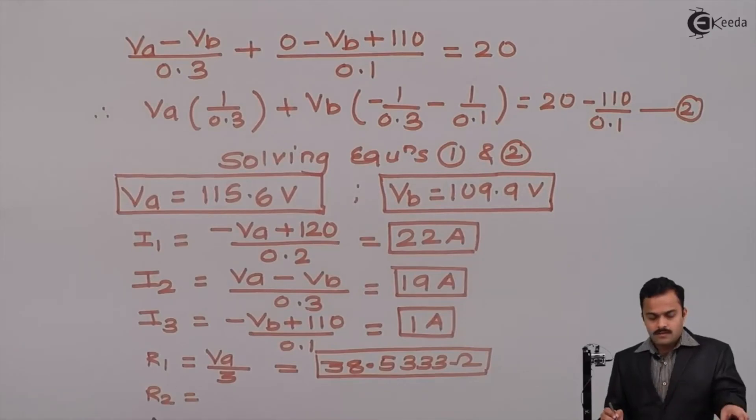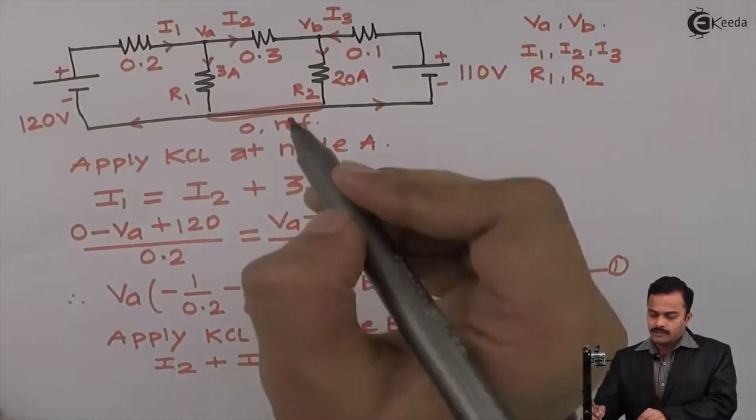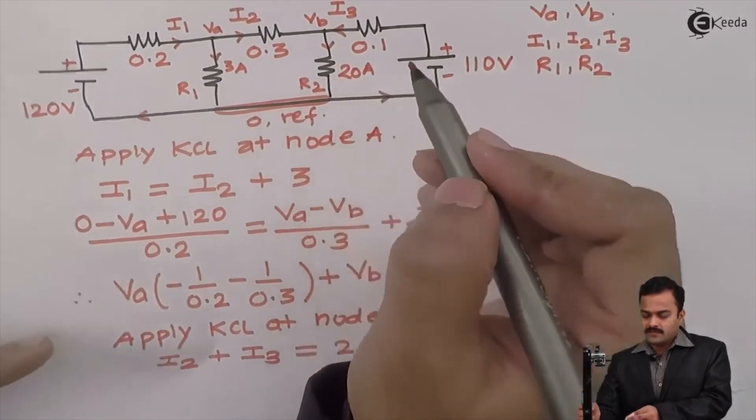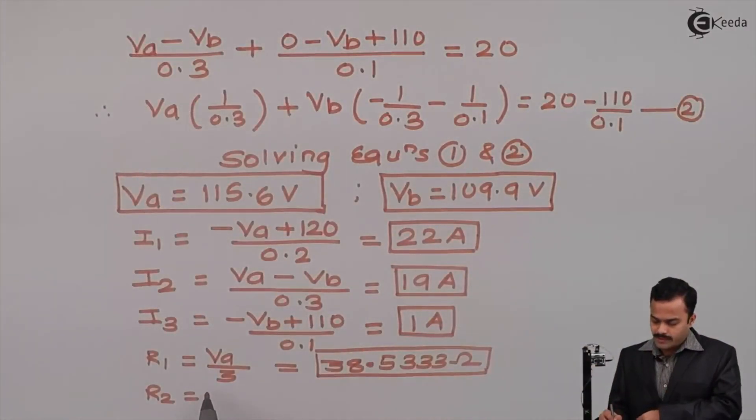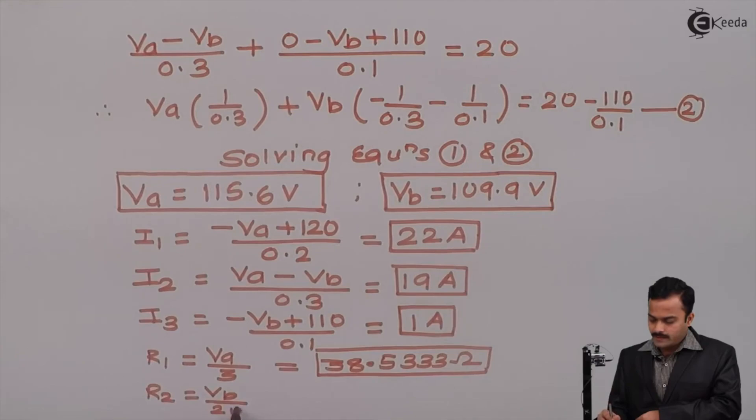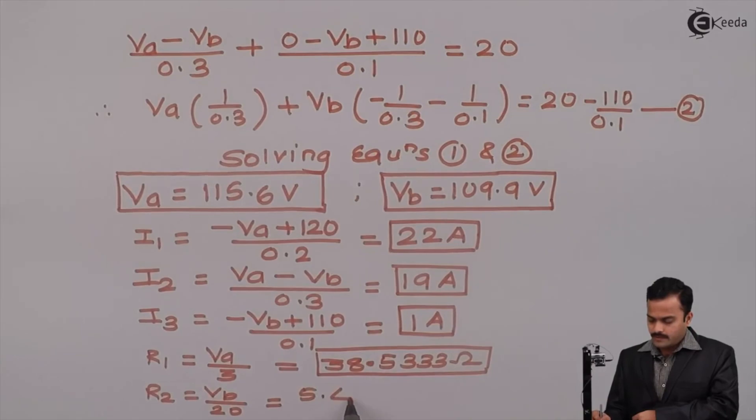We can get by knowing the value of Vb and this current. Vb we got 20 Ampere is given. Simply by Ohm's law, I can say Vb divided by 20. The answer I will get is 5.495 Ohm.